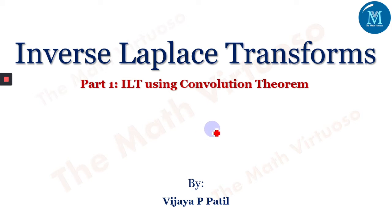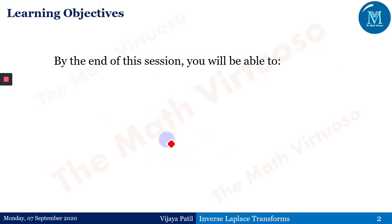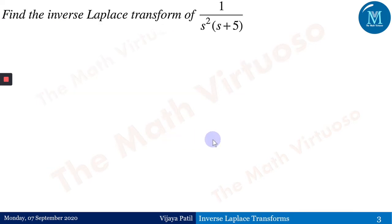Hello everyone. In continuation with the inverse Laplace transform, after the proof and statement of the convolution theorem, we'll be moving ahead with the problem section: inverse Laplace transform using the convolution theorem. I have divided this into different parts. By the end of the session, you'll be able to evaluate the ILT using the convolution theorem. The first question is 1 upon s² into (s+5).